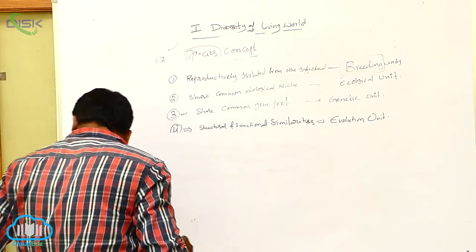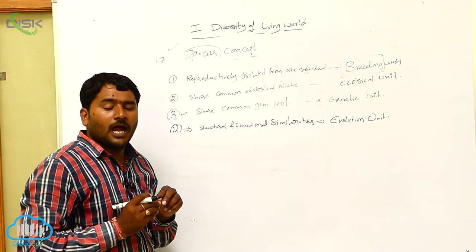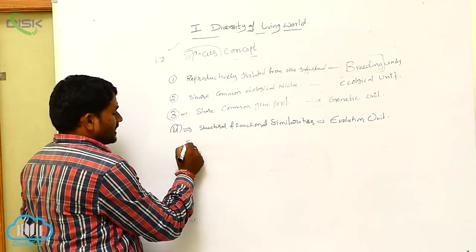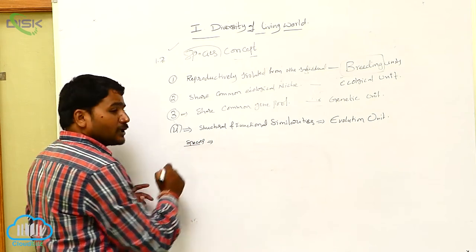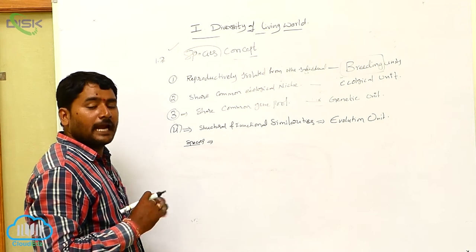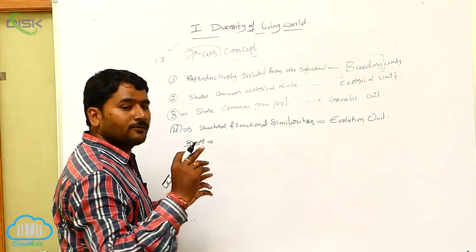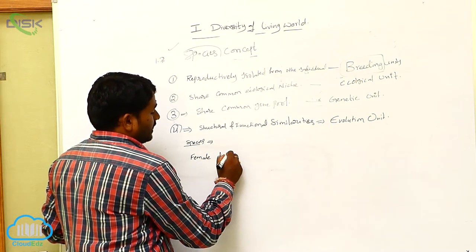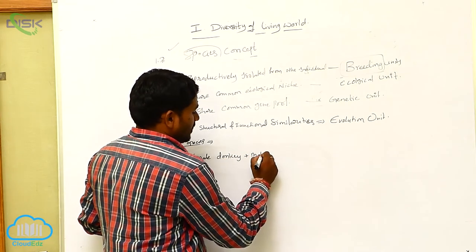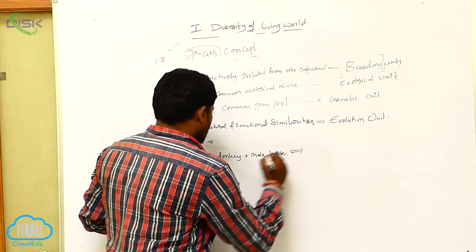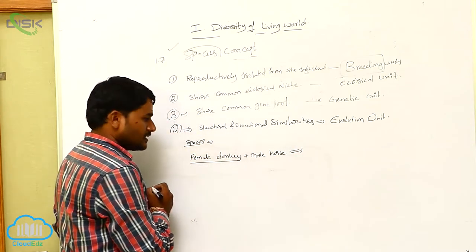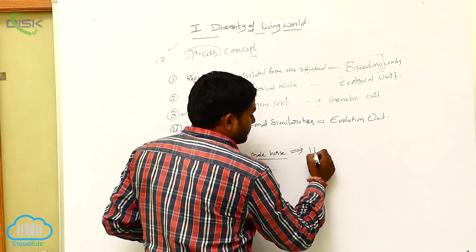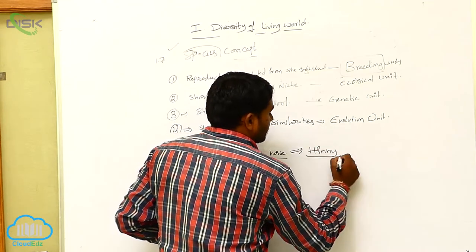Some closely related species undergo breeding and produce sterile offspring. For example, female donkey plus male horse — female donkey is one species, male horse is another species. So female donkey and male horse undergoing breeding produce a sterile animal that is called Hinny.